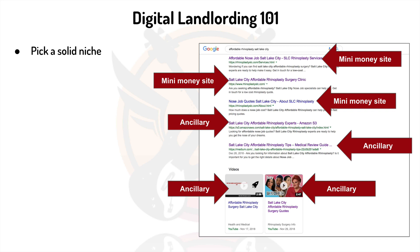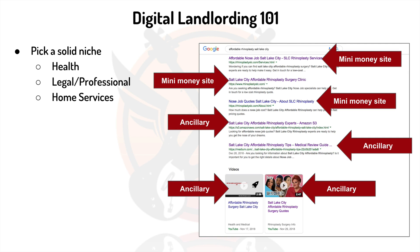Pick a solid niche. We've got lots of examples here, but here are the categories we love: health, legal, professional, home services. Health is all your medical stuff — like cosmetic surgery, chiropractic, or something specific to a certain condition or ailment. Legal or professional could be a DUI or DWI attorney, a traffic ticket lawyer, an IP protection attorney, or a bankruptcy law expert, and so on. Home services: air conditioning repair, garage door repair, carpeting, flooring, kitchen remodeling — you name it. There are thousands. If you go with one of these solid niches, there's money in them hills.